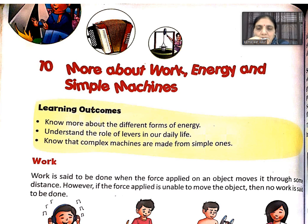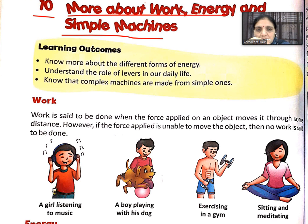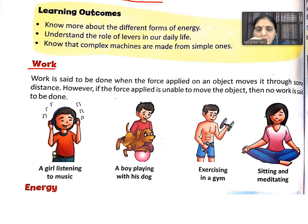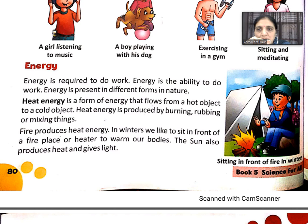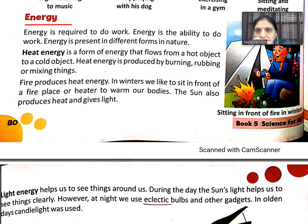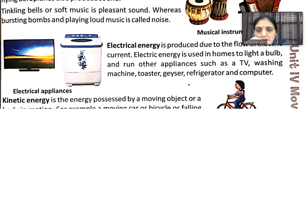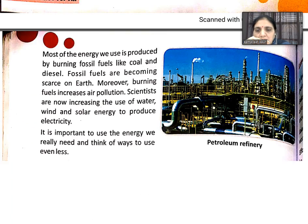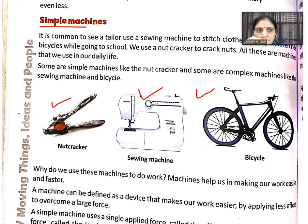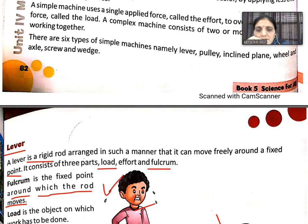Students of Class 5th, we have started Chapter 10 in Science. The heading is 'More About Work, Energy and Simple Machines.' Work is a force applied on an object. Energy is the ability to do work. We have already read about the types of energy and the law of conservation of energy in previous videos.